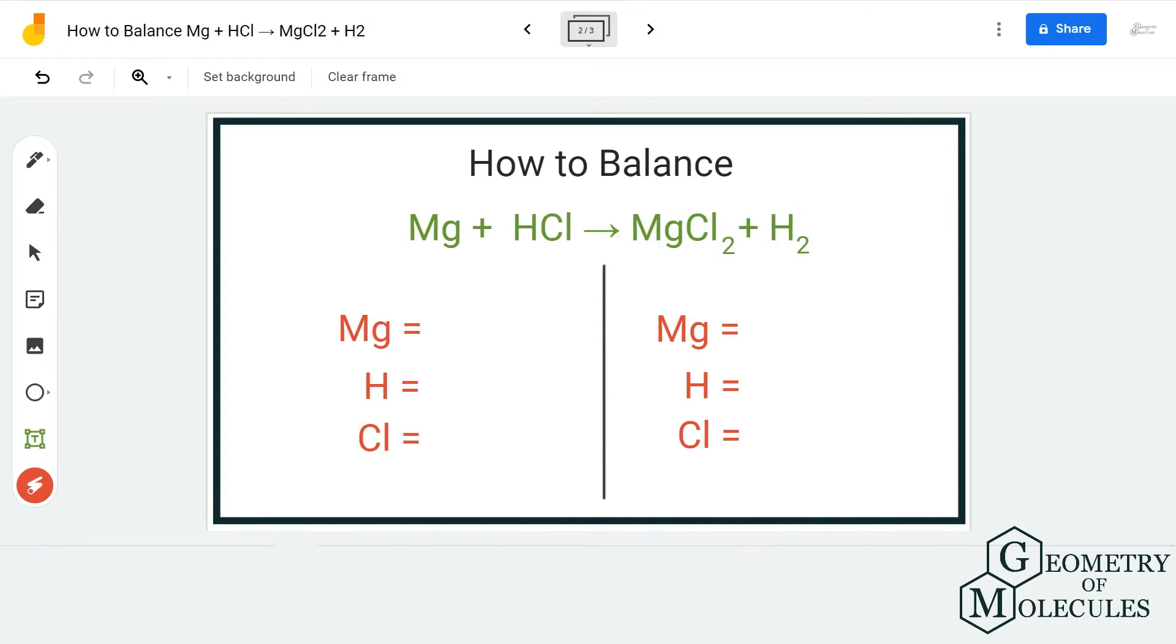To balance this equation, I'm first going to count the number of atoms on both reactant and product sides. On the reactant side, I have one magnesium atom, one hydrogen atom, and one chlorine atom. For the product side, I have one magnesium atom, two hydrogen atoms, and two chlorine atoms. So it is visible that the equation is not balanced.